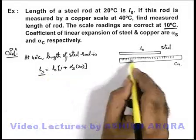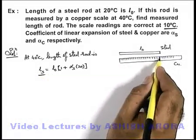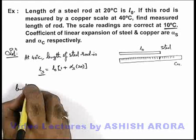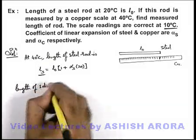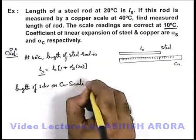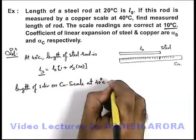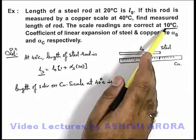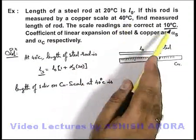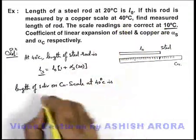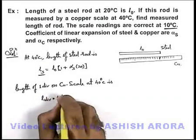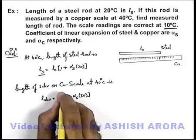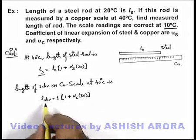This length we wish to measure using a copper scale, finding the total number of divisions at which the length of the rod can be measured. The length of one division on the copper scale at 40 degree centigrade: its actual length is 1 unit at 10 degree centigrade, so at 40 degree centigrade — which is 30 degrees higher — the length of one division can be written as 1 × (1 + α_c × 30).